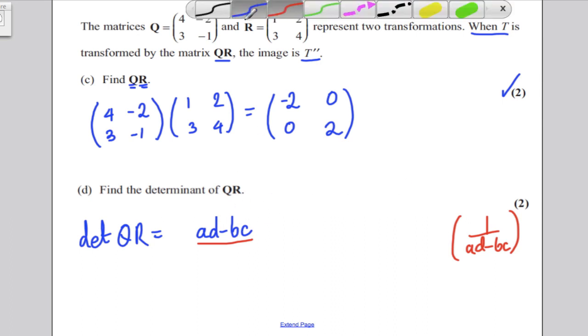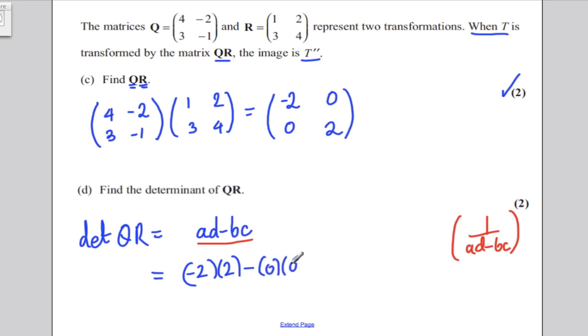So, here, all you've got to do is multiply AD, so AD, and then subtract BC. So, it's clearly negative 2 multiplied by 2 subtract 0 multiplied by 0, which is negative 4. Simple as that.